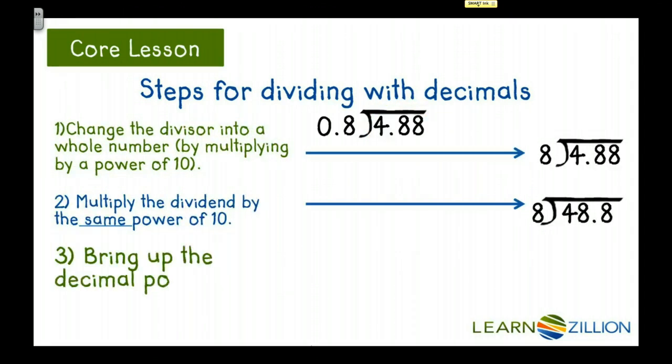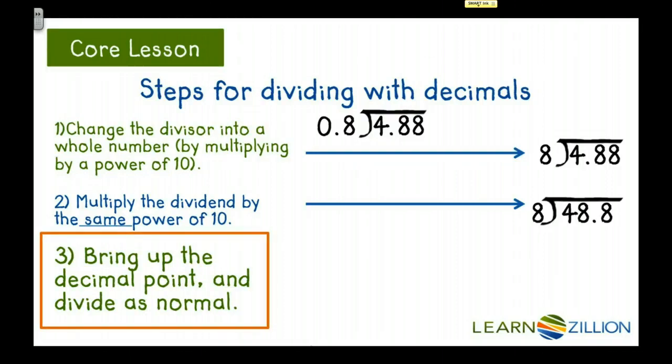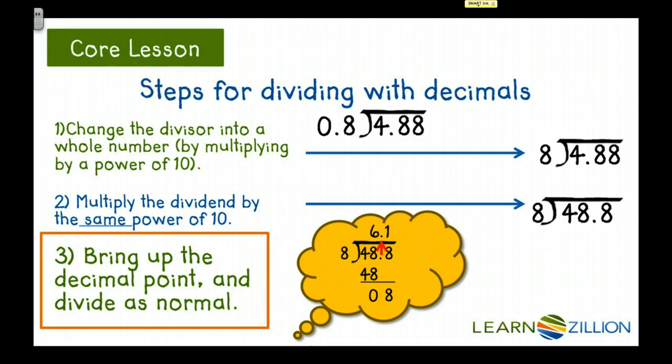The last step when dividing with decimals is to bring up the decimal point and divide as normal. Here's what it would look like. Notice that the red arrow shows where you should put the decimal point in the quotient. So our final answer would be 6.1.